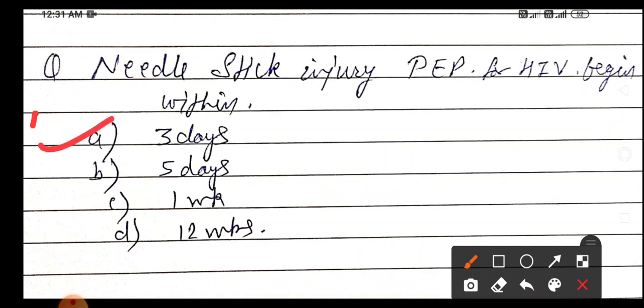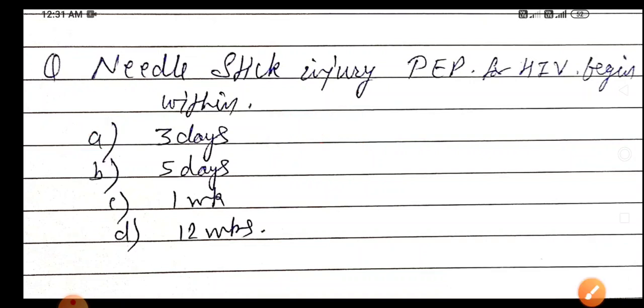The answer is three days or less than 72 hours. Why not five days, why not one week, why not 12 weeks? Because PEP is not effective after 72 hours. After 72 hours, the virus has time to make too many copies. That's why the best time to start PEP is immediately, immediately after exposure.